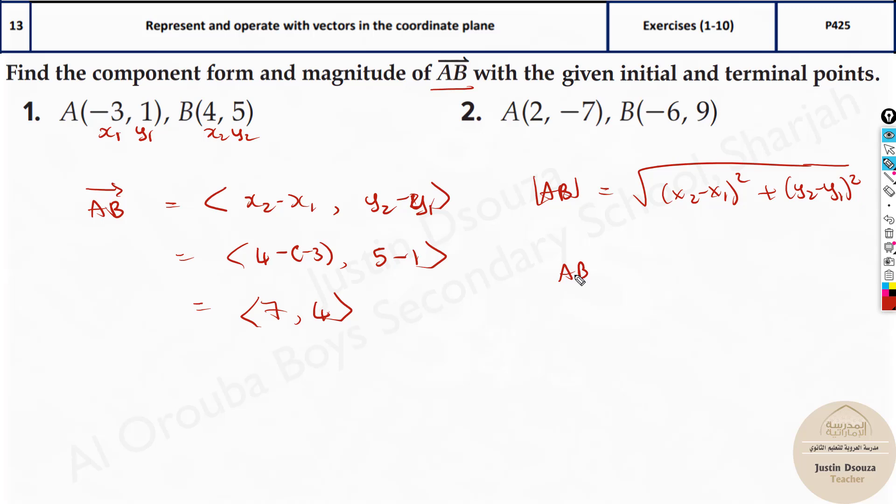Magnitude basically, okay I forgot this line over here. Magnitude is square of both the component forms. If you know the component form, it will be 7 squared plus 4 squared.